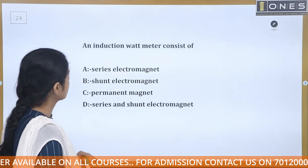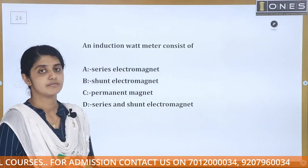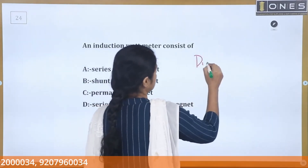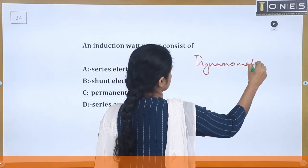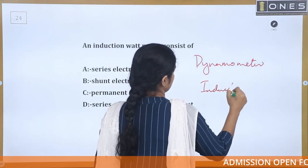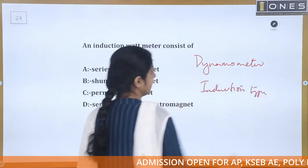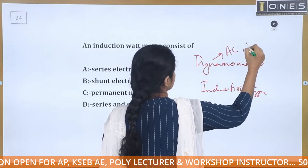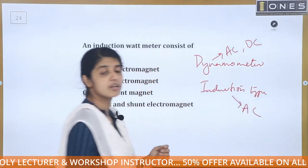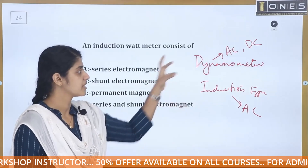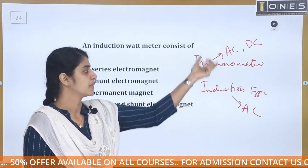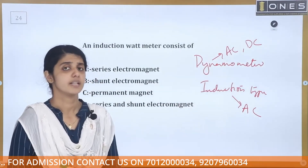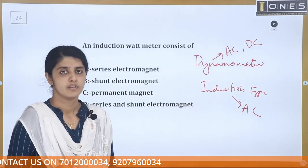An induction wattmeter consists of an induction type instrument. For power measurement, wattmeter types include the dynamometer type and the induction type. The dynamometer type works on both AC and DC, while the induction type works only on AC because it is based on Faraday's principle of electromagnetic induction.